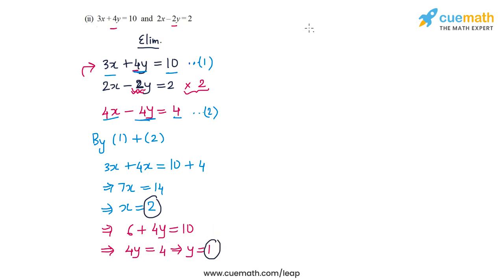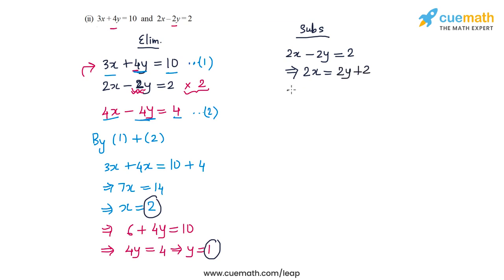Now let's arrive at the same answer using substitution. We can take any equation and find one variable in terms of the other. Taking the second equation, 2x minus 2y equal to 2: 2x equals 2y plus 2, so x equals y plus 1. Now I can substitute this into the first equation.